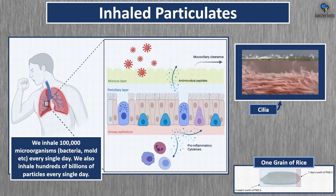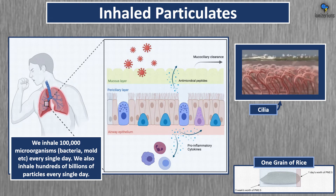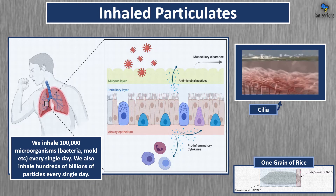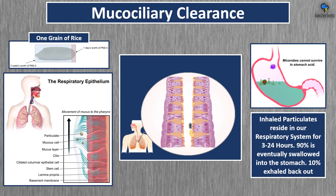We inhale 100,000 microorganisms a day, every single day, and also hundreds of billions of particles every single day. When we inhale these particles, the cilia in a rapid wave-like motion brush the particles back up the lungs to be cleared out. Three weeks of particulate matter equals roughly one grain of rice — it's very, very small. It takes between 3 and 24 hours for particulates to move into our stomach. Ninety percent of the particles we inhale — like dust — we actually end up swallowing; ten percent we exhale. In our stomach, microbes can't survive, so our stomachs are designed for this. Still, we want to minimize the particles we inhale.